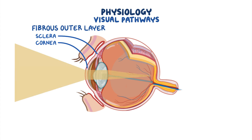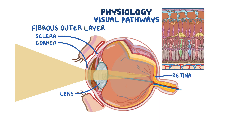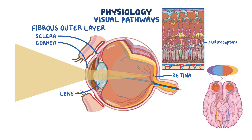The light that passes through the cornea is directed to the lens, which in turn collects light rays and focuses them into the retina at the back of the eye. The retina houses photoreceptors that translate light into electrical impulses.